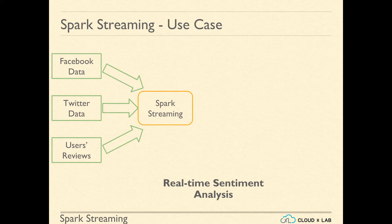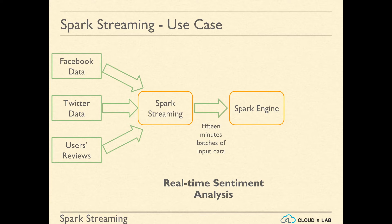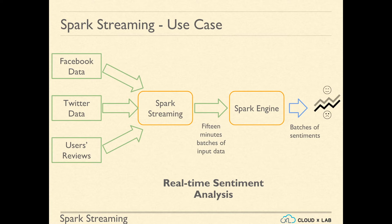Spark Streaming can retrieve data from many sources at the same time. Spark Streaming receives data from Facebook, Twitter, and users' reviews submitted to the website. Spark Streaming creates 15-minute batches from this input data, and then the Spark Engine processes each 15-minute batch and analyzes the sentiment of users. For analyzing sentiments, we can use various libraries like Stanford Core NLP.